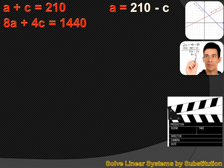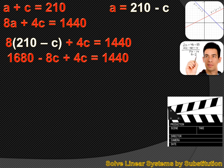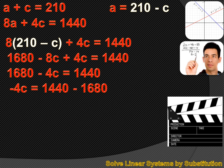So I can substitute 210 minus C for A in the second equation. When I do that, it reads 8 times (210 minus C) plus 4C equals 1,440. Now we only have one variable — only a C — and we can solve for it. We distribute the 8 to get 1,680 minus 8C plus 4C equals 1,440. Now I combine like terms, subtract 1,680 from both sides, combine like terms again, then divide both sides by minus 4, and I come up with C equals 60.